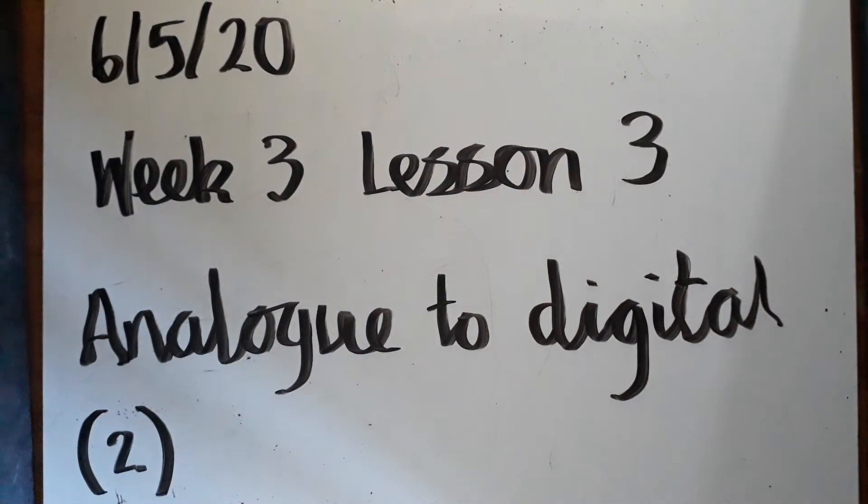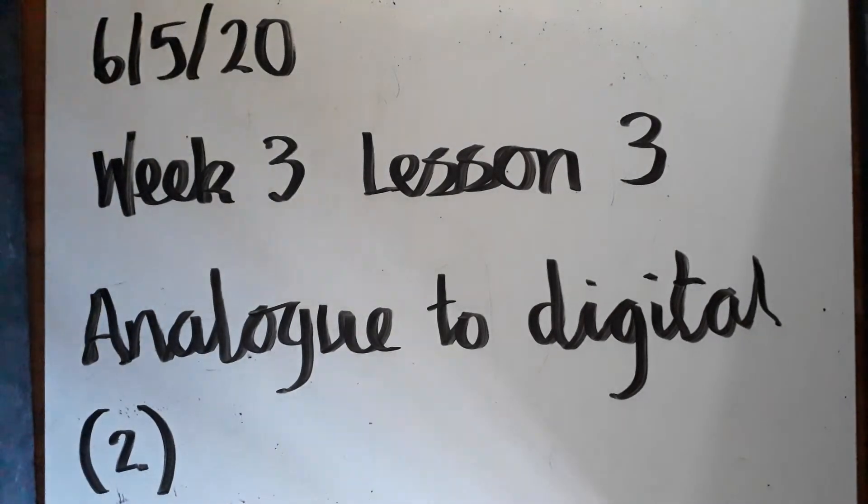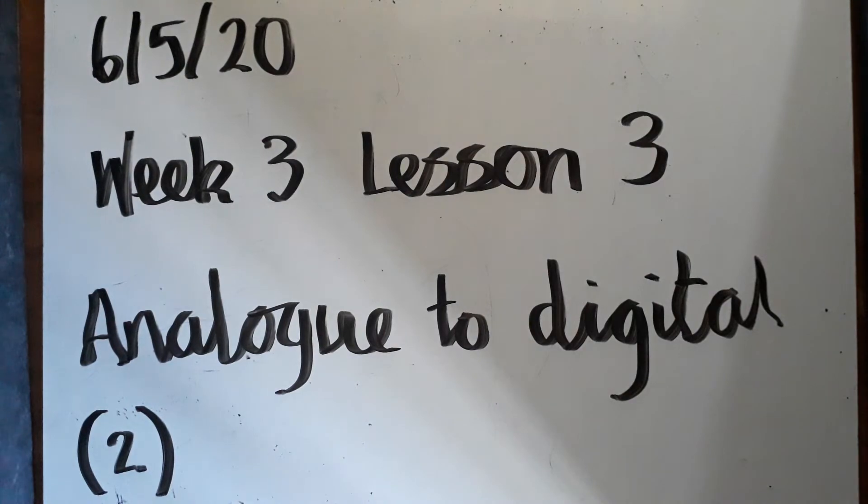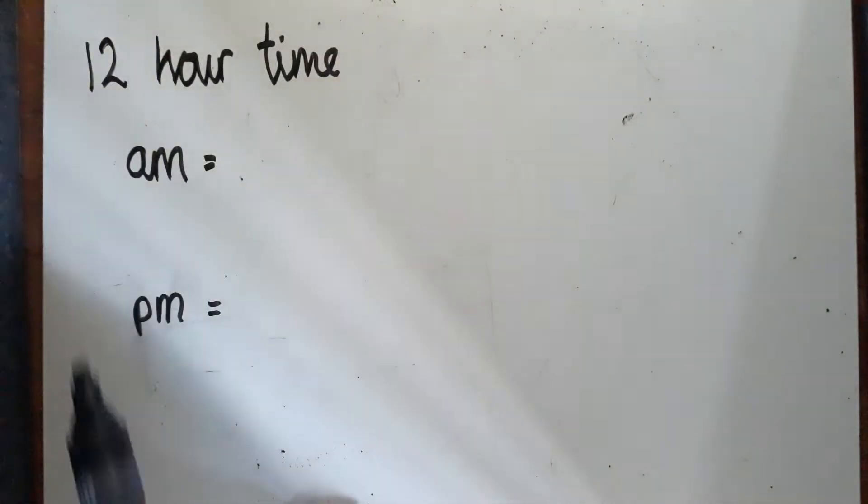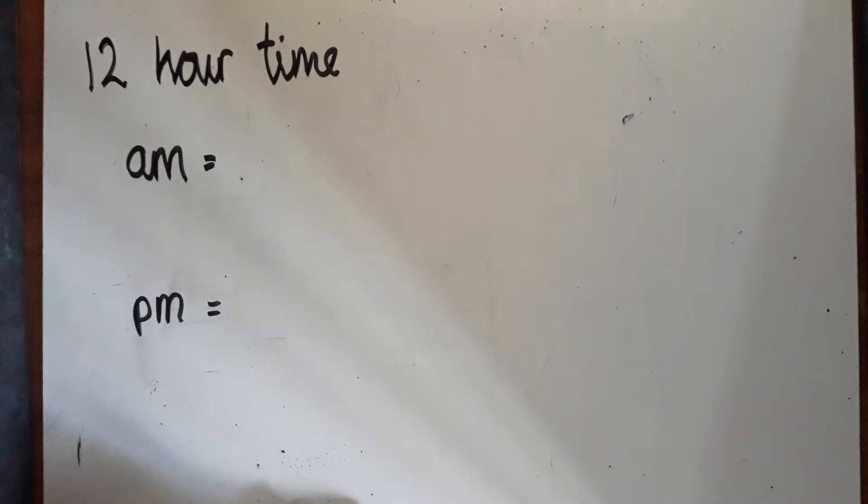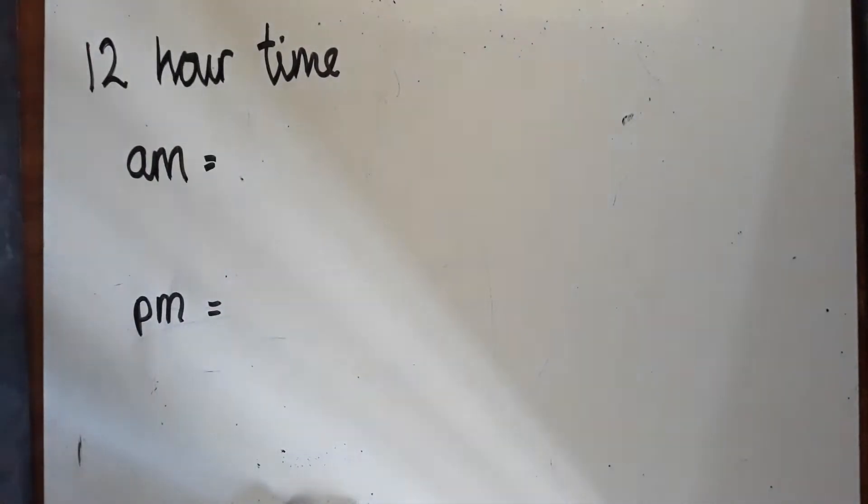Welcome back. This is the second video for week three, lesson three: analog to digital time conversion. We're using 12-hour time to tell the time, so we need to use AM or PM to help understand whether it's 10 o'clock in the morning or evening.